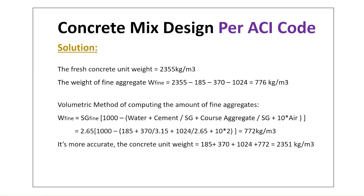The fresh concrete weight is estimated at 2,355 kg/m³. The fine aggregate weight is calculated as total fresh concrete weight (2,355) minus water (185), minus cement (370), minus coarse aggregate (1,024), giving a fine aggregate content of 776 kg per cubic meter. This is the weight method.